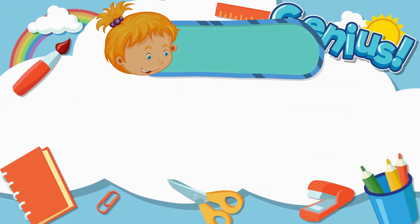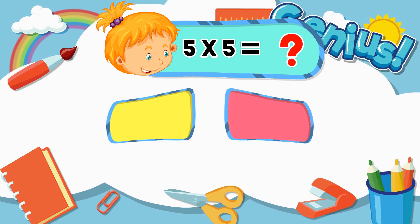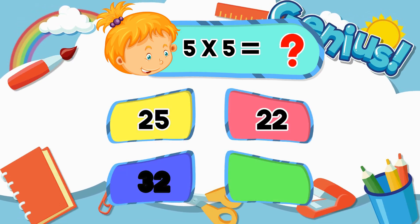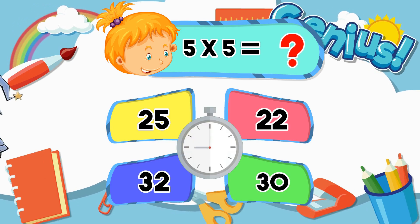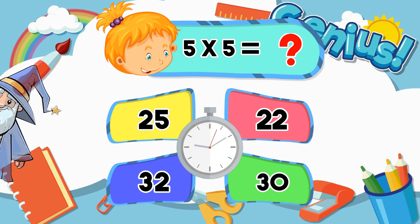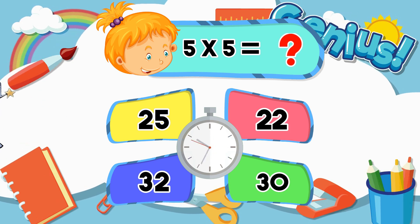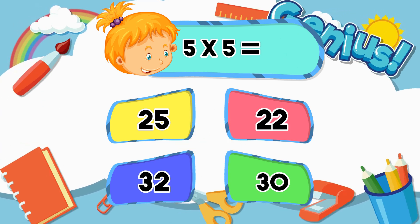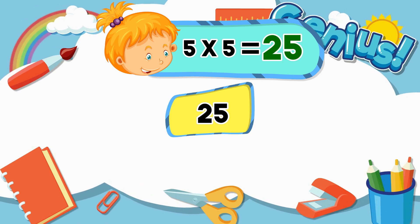What is 5 times 5? 20, 22, 30. Answer: 25.